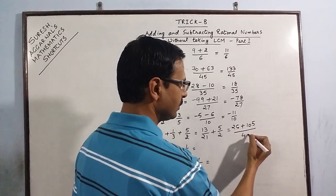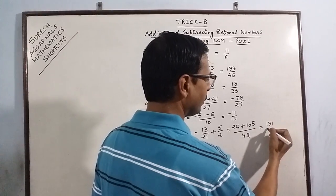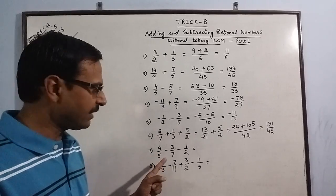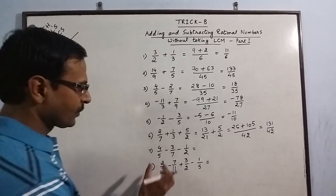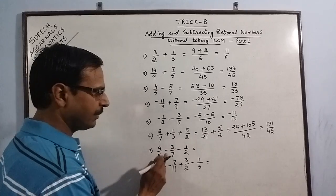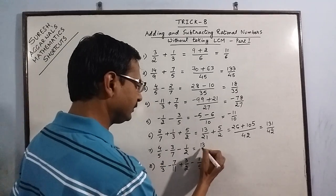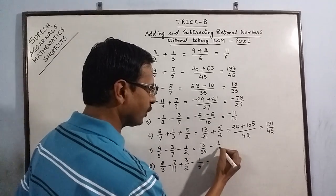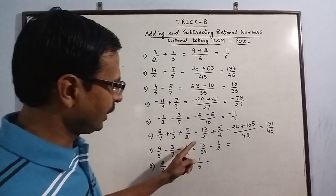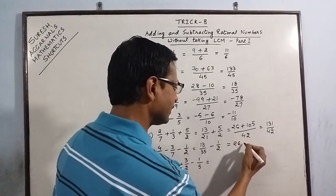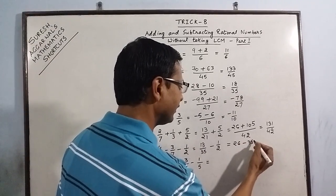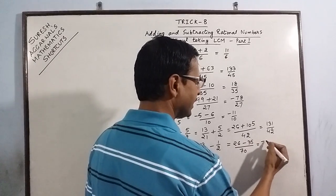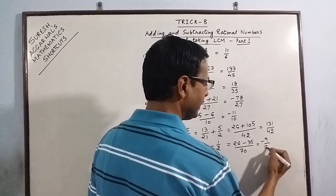21 times 2 is 42 in the denominator, so the final answer is 131/42. Now another example involving negative signs: reduce the first two — 4 times 7 is 28 minus 3 times 5 is 15, giving 13 over 7 times 5 is 35. Minus 1/2 is the third rational number. 13 times 2 is 26, minus 35, over 35 times 2 is 70. So 26 minus 35 is minus 9, giving a final answer of minus 9/70.